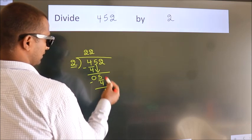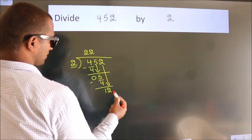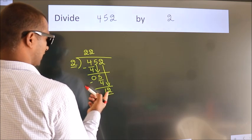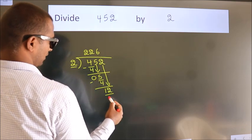After this, bring down the beside number. So 2 down. So 12. When do we get 12? In 2 table. 2 times 6 is 12.